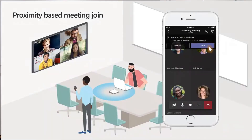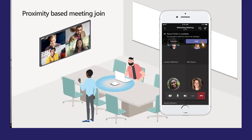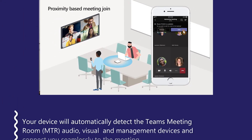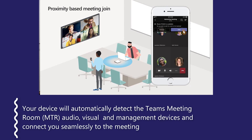There's another Proximity Join use case which I think is a bit of a killer. Now imagine you're in the office and you've just joined a Teams call via mobile phone. This happens in so many cases where you're running through the corridor trying to find a room to continue your meeting.